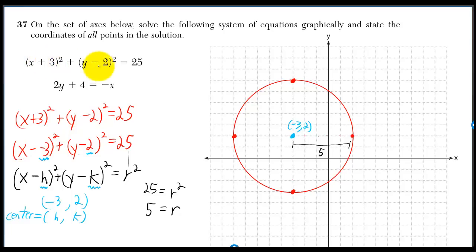We can graph the first equation by realizing it's the equation of a circle. The equation of a circle is x minus h squared plus y minus k squared is equal to r squared, where h, k is the center and r is the radius.